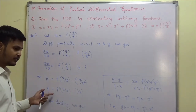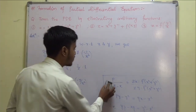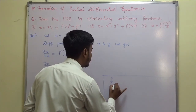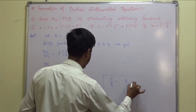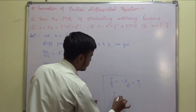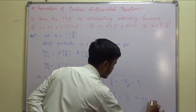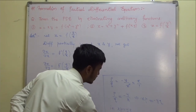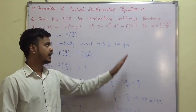Now just divide: p upon q equals f prime of y by x times minus y by x squared, divided by f prime of y by x times 1 by x. The f prime terms cancel, giving p by q equals minus y by x squared times x, so p by q equals minus y by x. Therefore xp equals minus yq, or equivalently xp plus yq equals 0. This is the required partial differential equation for equation 3.